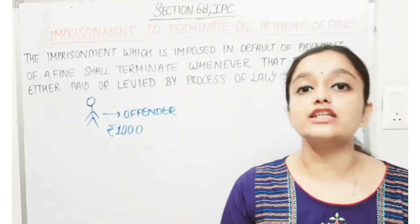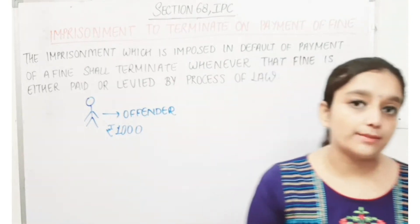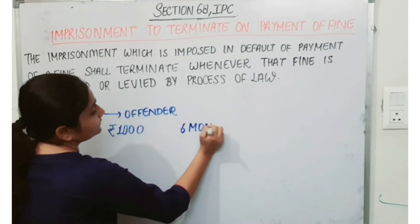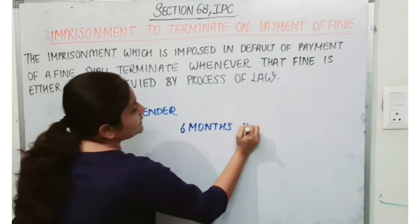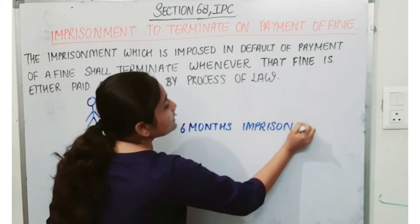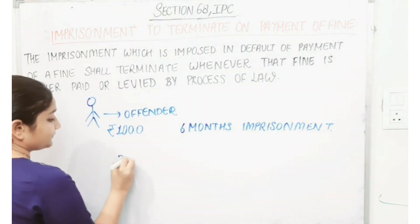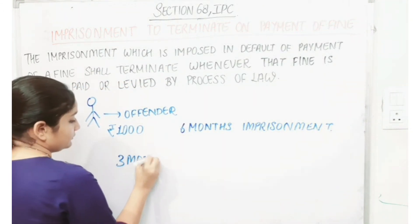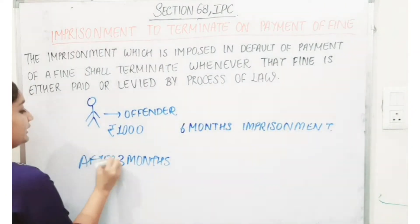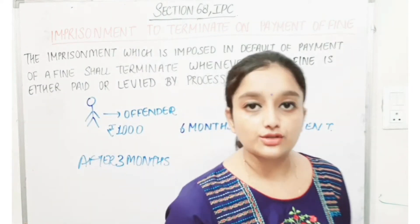Now, as we studied in the last section, when a fine is imposed under Section 100 IPC, it comes with 6 months of imprisonment. Now after 3 months of serving the imprisonment, the person says they want to pay the money and be released.